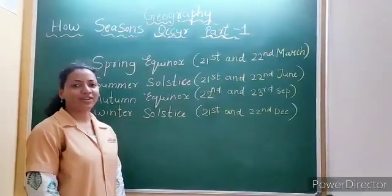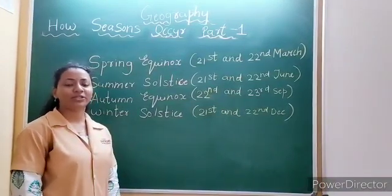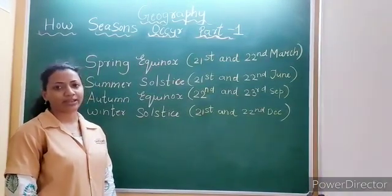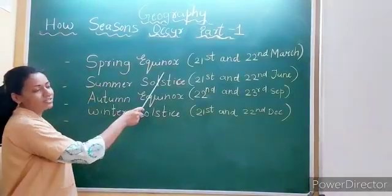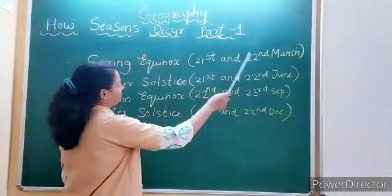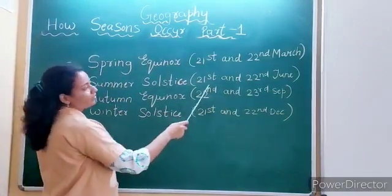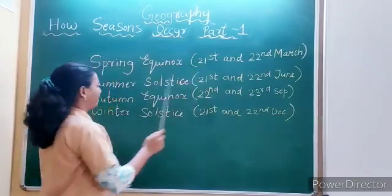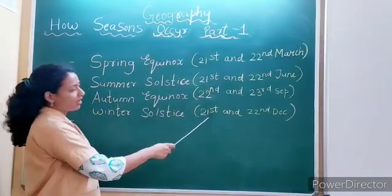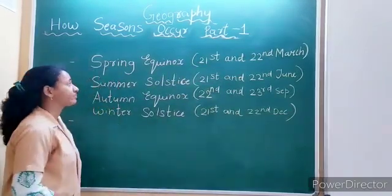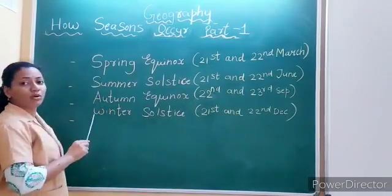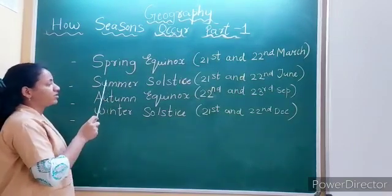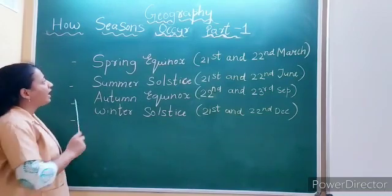We have learnt that sun rays fall on different places during different seasons, leading to variation in the duration of daytime and nighttime. We have seen spring equinox on 21st and 22nd March, summer solstice on 21st and 22nd June, autumn equinox on 22nd and 23rd September, and winter solstice on 21st and 22nd December. This cycle goes: spring equinox, then summer solstice, then autumn equinox, then winter solstice, and again spring equinox.